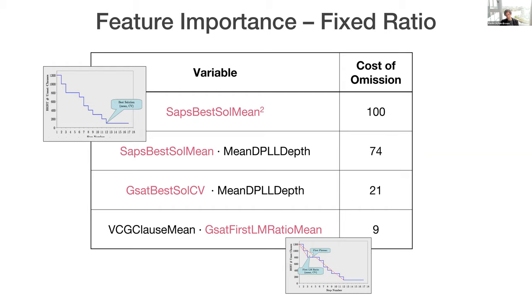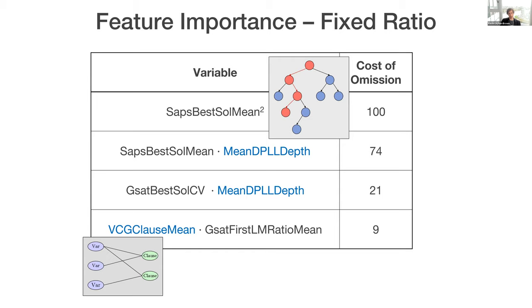And interpreting this, we can see that these local search probing features that I told you about were important all over the place. So every one of these four quadratic features that we've learned here includes one of these local search probing features. And Donald Knuth's search space size estimate feature featured in two of the four. And the variable clause graph node heuristic also features in the last one. So this gives us some sense of what's going on in terms of understanding how these models are able to make good predictions.